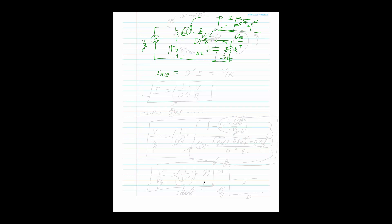The average output current D'·I equals V/R (since the output voltage is constant), so I = (1/D')·(V/R). This is the value of I we substitute back into the volt-second balance equation wherever I appears.